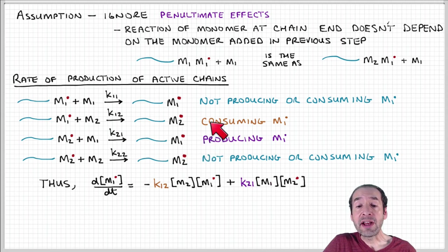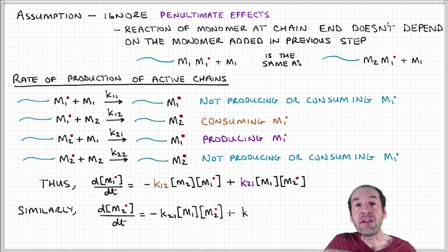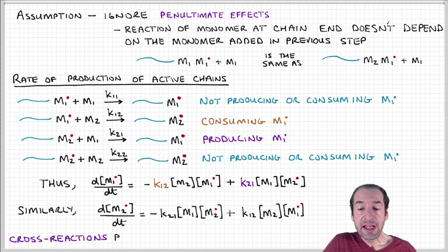Therefore, we can write this equation and we can write a similar equation for the net rate of production of chains that have an active site associated with monomer two.